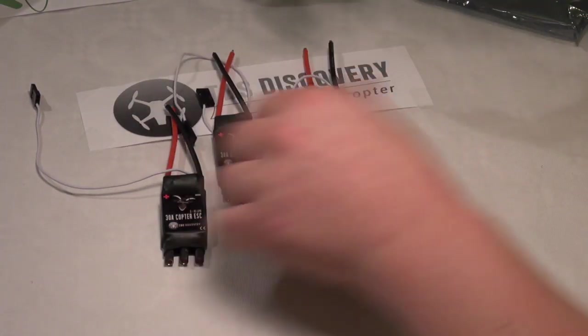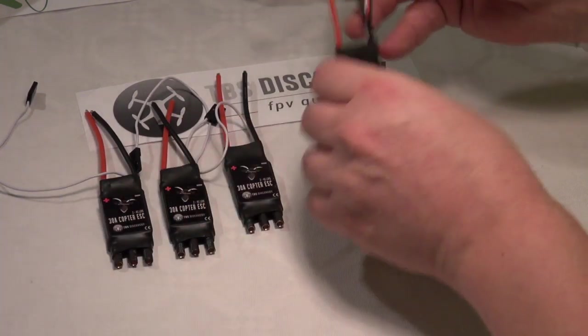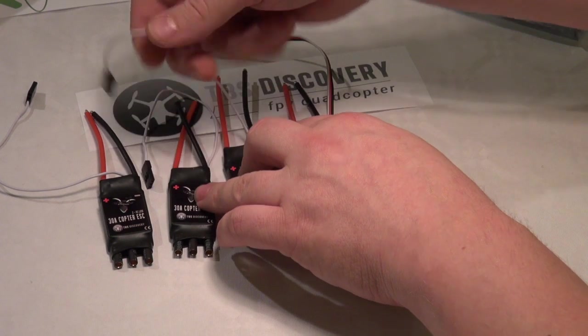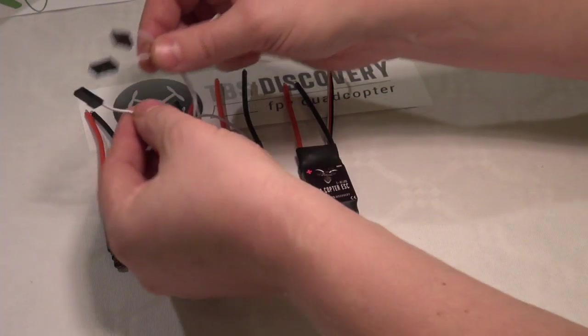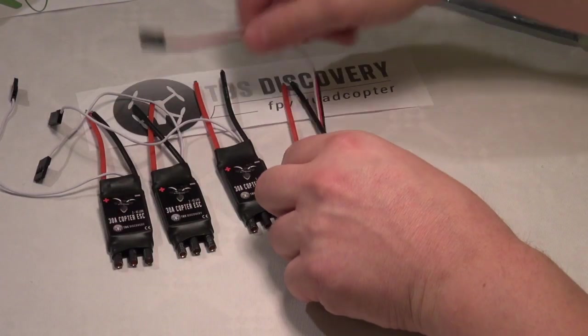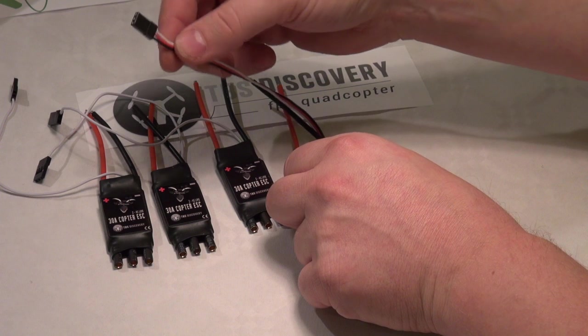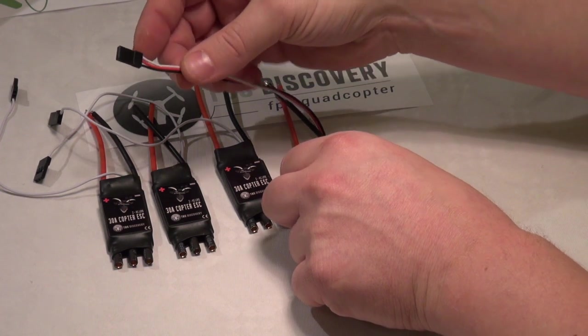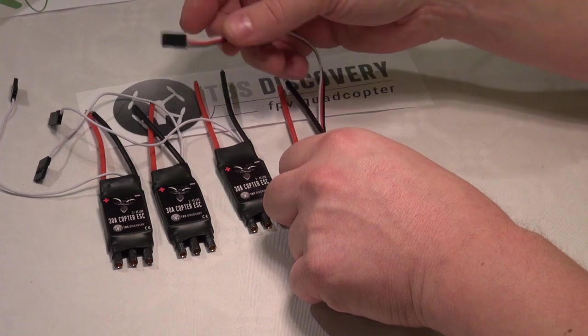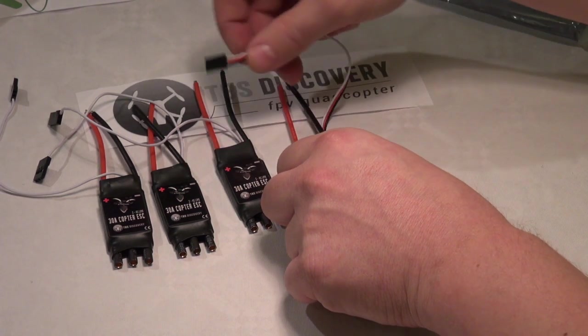We have three ESCs with only signal wires and one ESC with plus and minus for powering the Naza controller, KK controller, CC3D, or whatever controller we are using.